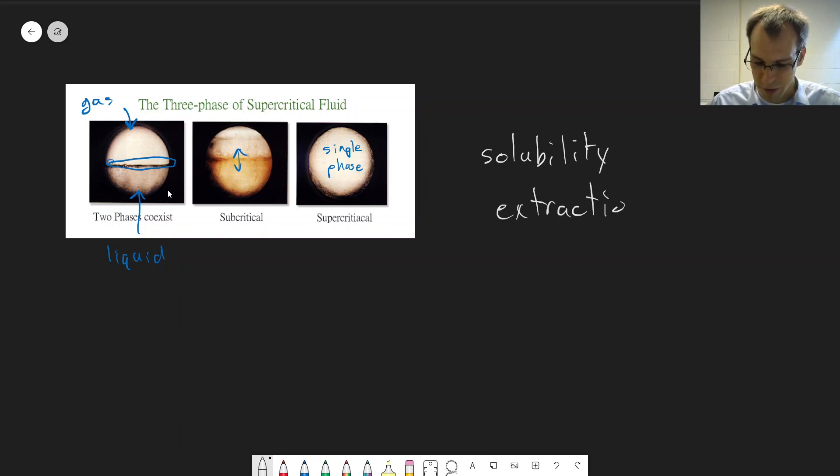I believe that supercritical fluid is used to extract caffeine from coffee to make decaf. You can use supercritical fluid to dissolve the caffeine while leaving the other things that you want in the coffee.